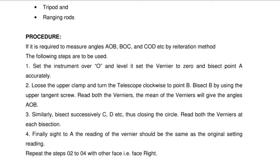By reiteration method, the following steps are to be used. Step 1: Set the instrument over O and level it. Step 2: Set the vernier to zero and bisect point A accurately. Loosen the upper clamp and turn the telescope clockwise to point B. Bisect B using the upper tangent screw and read both verniers. The mean of the verniers will give the angle AOB.